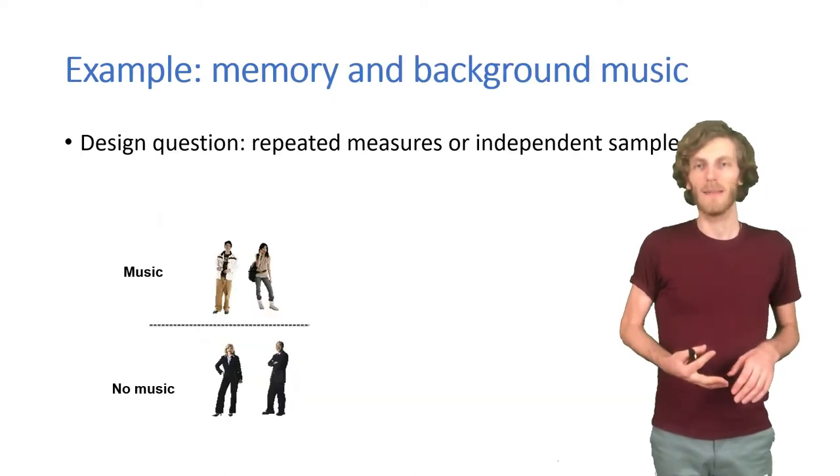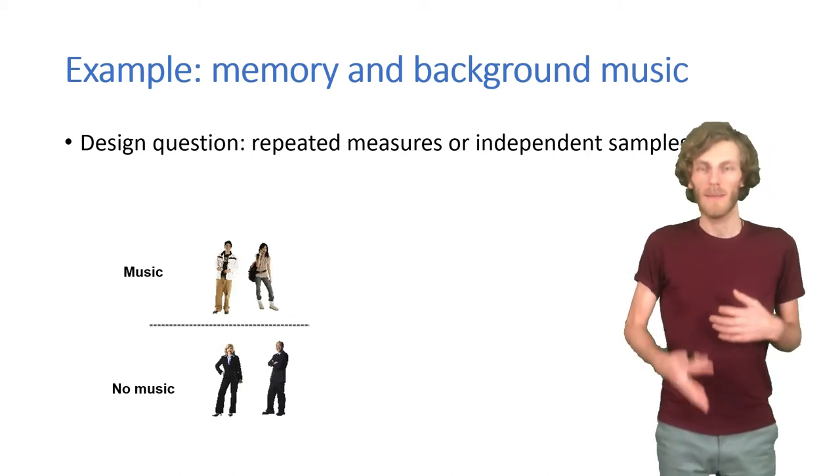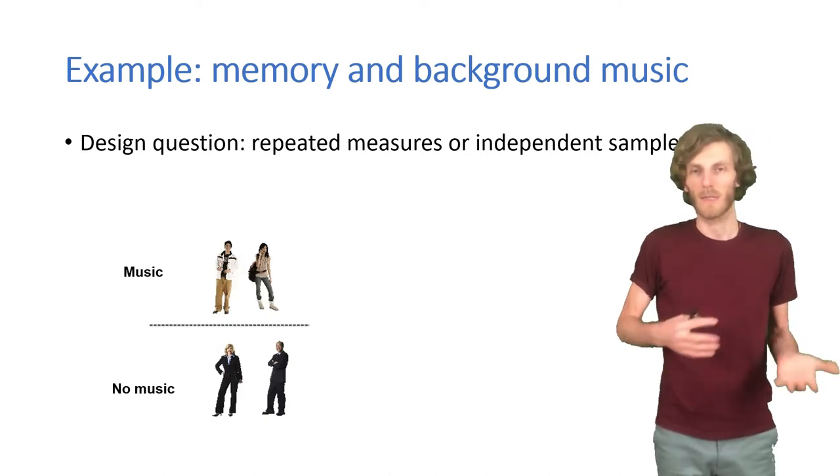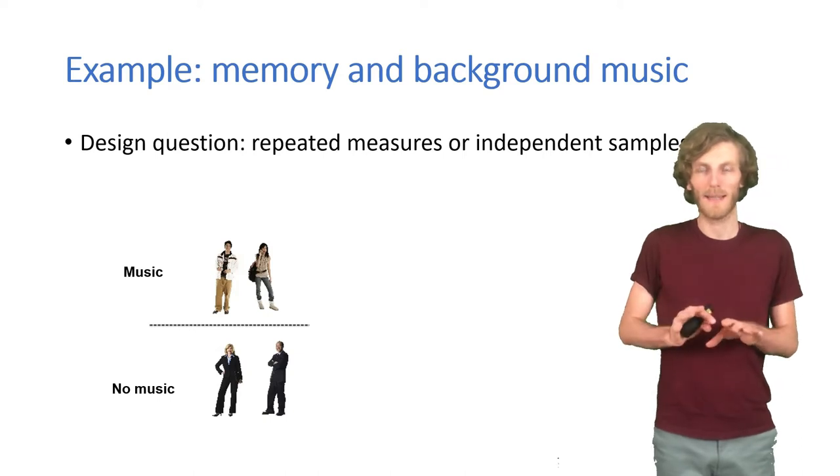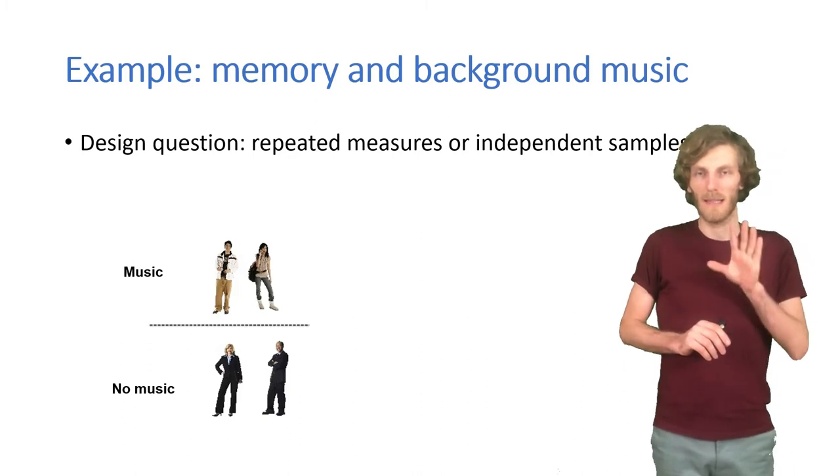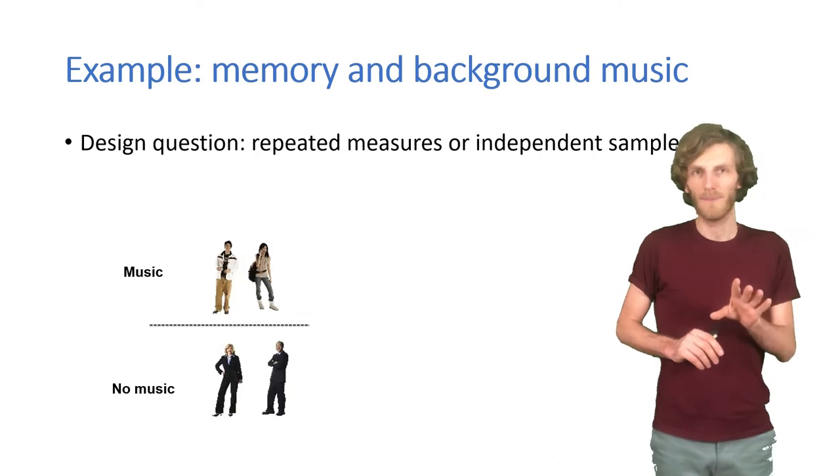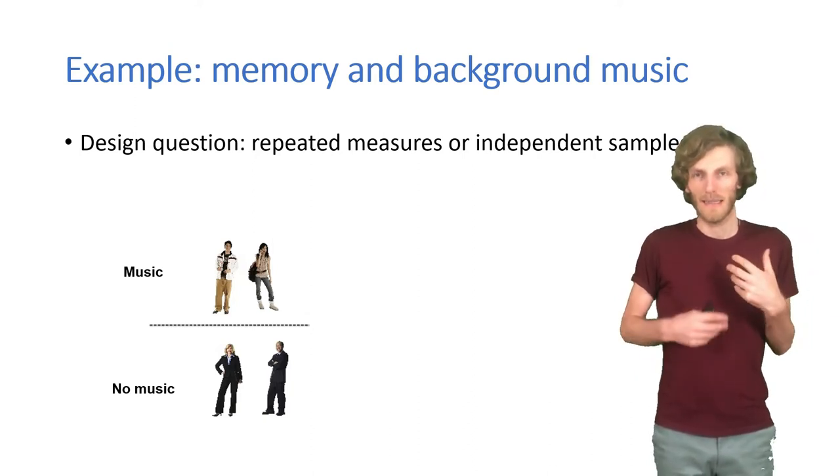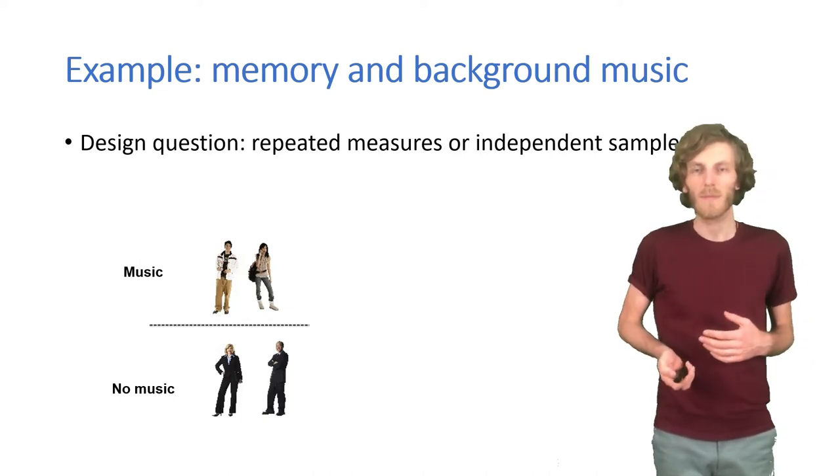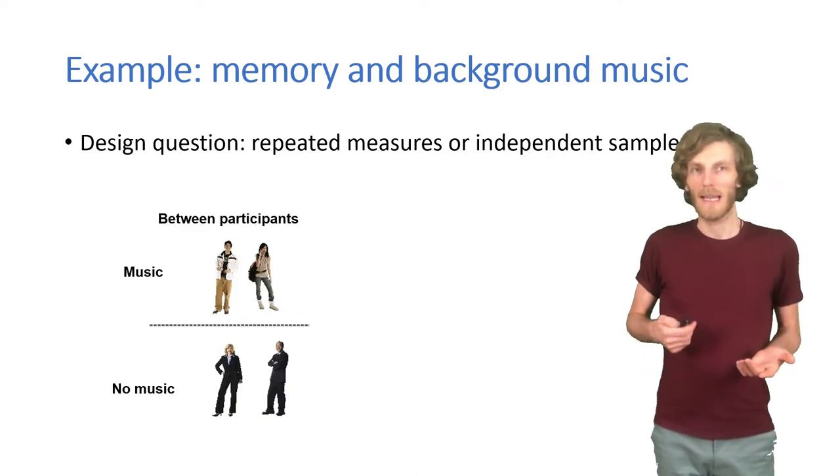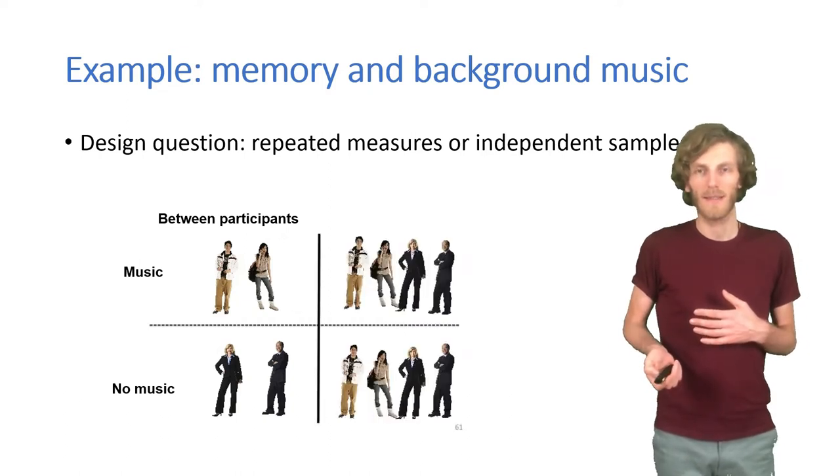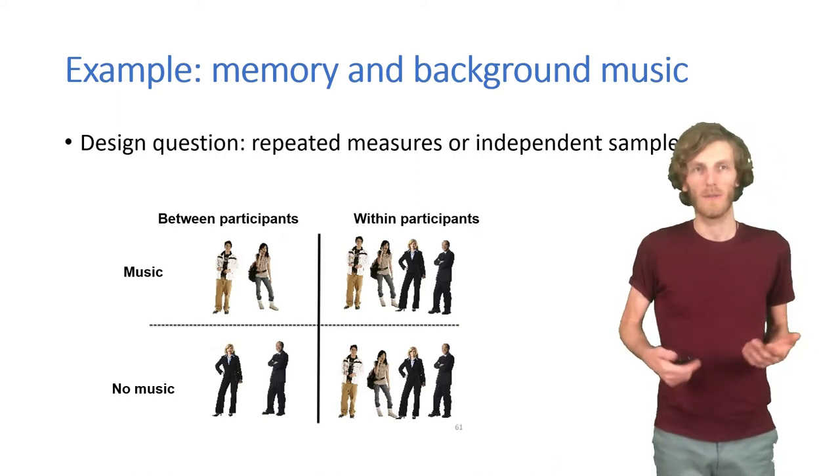So as an example throughout, let's look at how memory, how test scores are affected by background music. And the first question to ask is what's our design? Is it repeated measures or independent samples? Between participants, shown on the screen here, is when you have independent samples. We have one group studying with music, one group who's studying without music. Alternatively, we could run the study as a study where everyone takes part in both conditions, and that's then called within participants or repeated measures.